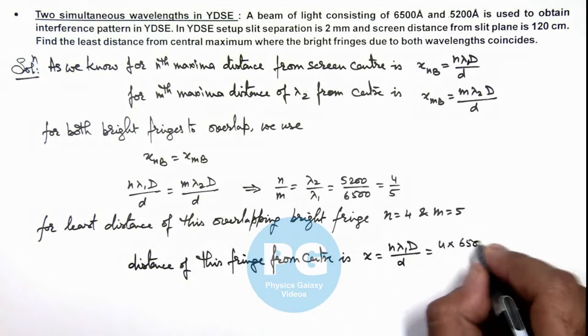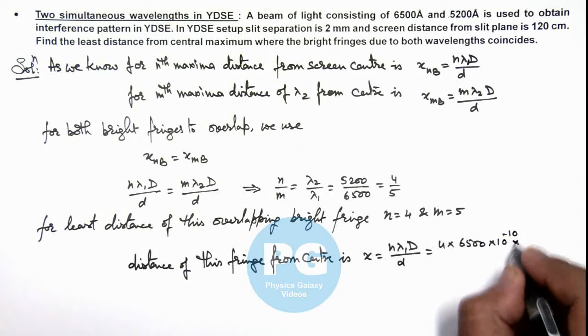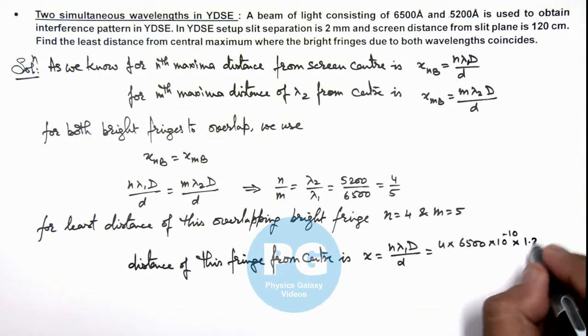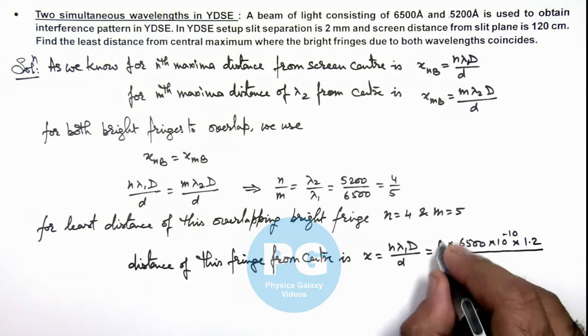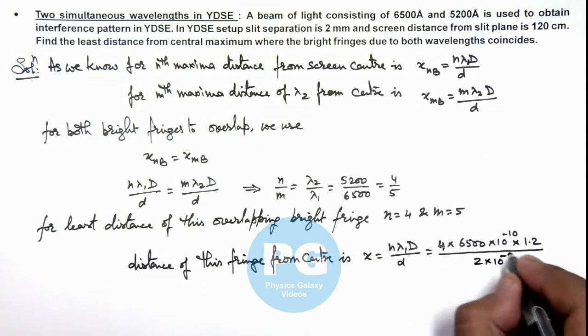Multiplied by D here is 120 centimeter which is 1.2, divided by small d we are having 2 into 10 to power minus 3.